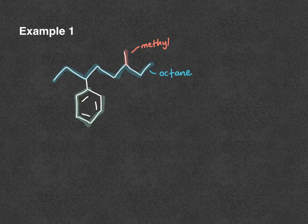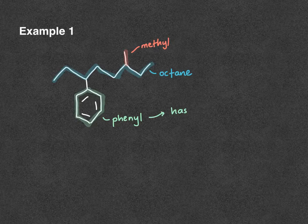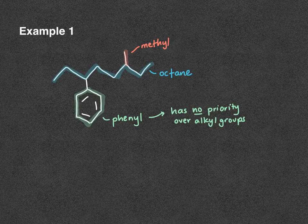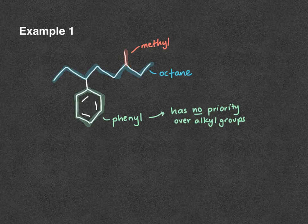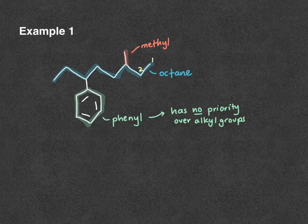Now when benzene is a group rather than the parent, we don't treat it any differently. Going from left to right in our numbering, 1, 2, 3 is our first branch. From right to left, 1, 2, 3. In this case we're going to break the tie with the first letter of the group — methyl versus phenyl — and methyl will win out. So we're going to number from right to left.